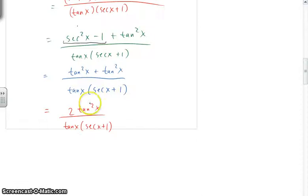And now I see a tangent in the top and a tangent in the bottom. I'm going to cancel one of those out. So I have 2 tangent of x over secant of x plus 1. And now let's just change it to sine and cosine.